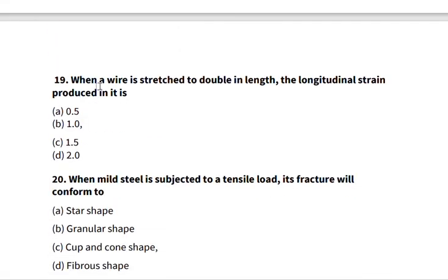Nineteen: when a wire is stretched to double its length, the longitudinal strain produced in its length, the longitudinal strain produced is going to be one. Just one. Twenty: when mild steel is subjected to a tensile load, its fracture will conform to, and that is cup and cone shape.